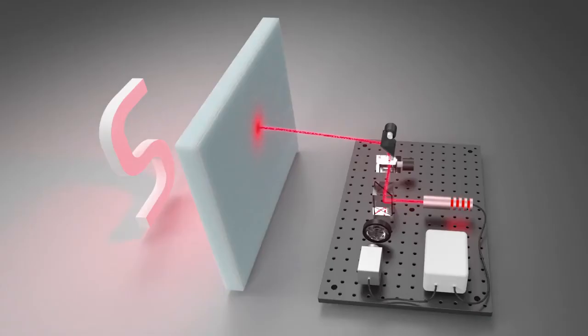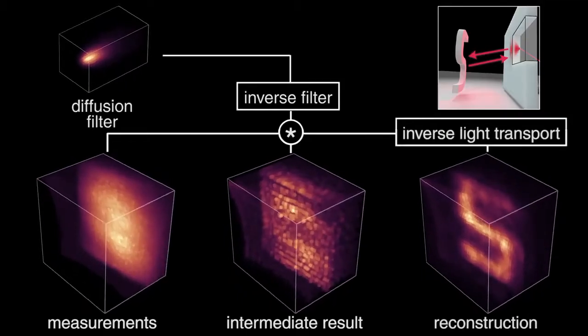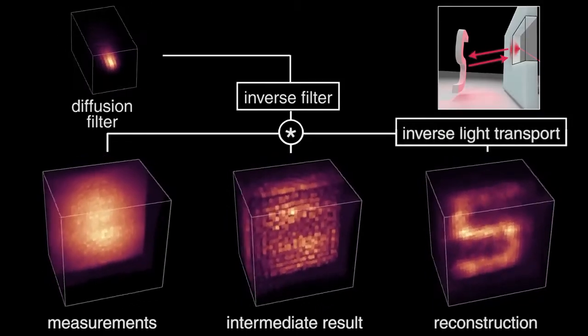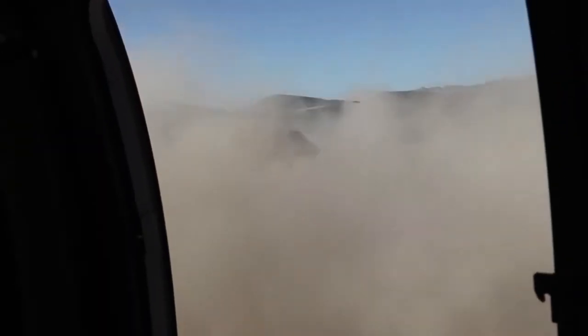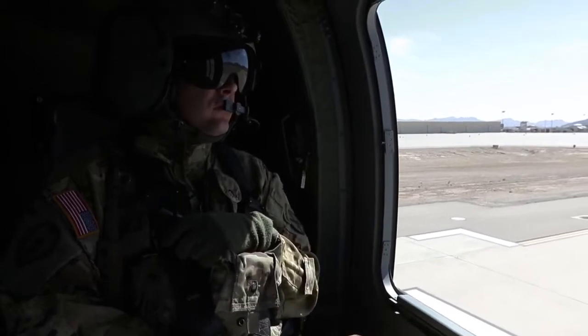They shine an ultra-fast laser through a barrier and read back the reflected photons, assembling an image of what is behind the barrier in just fractions of a second. This new research will show objects in three dimensions, giving soldiers more accurate situational and threat awareness in degraded visual environments.